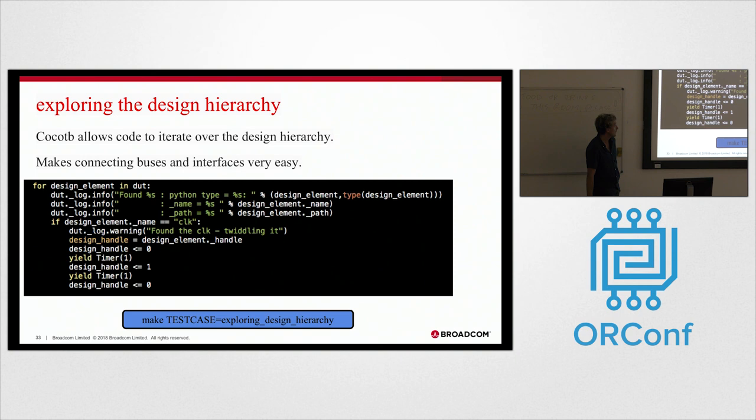I guess this is one of the more interesting features of Cocoa TB - you can iterate over design elements. Here we're iterating over our top-level data. If we find a clock - this is a pretty brain-dead example - but if you find a design element called clock, let's toggle it. But like I said earlier, this makes passing, looking for interfaces that you might be interested in and hooking up monitors really easy.